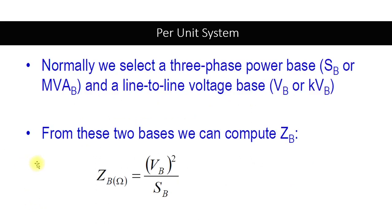Normally we select three-phase base power and line-to-line voltage as our two chosen base quantities. The remaining two — impedance and current — are calculated from these. Since Z equals V squared divided by S, we get Z base equal to V base squared divided by S base.